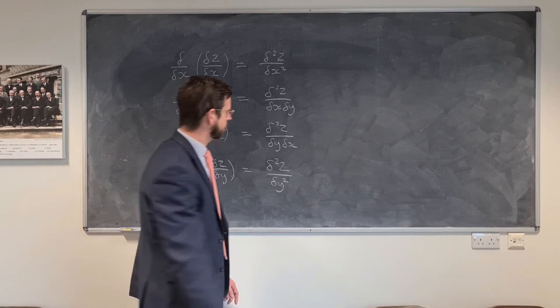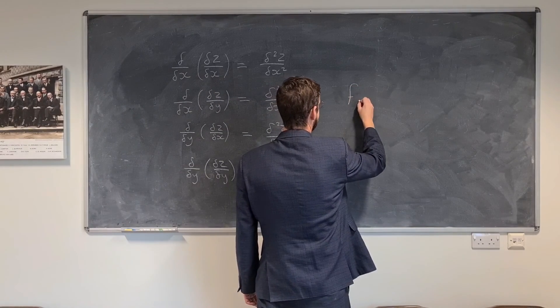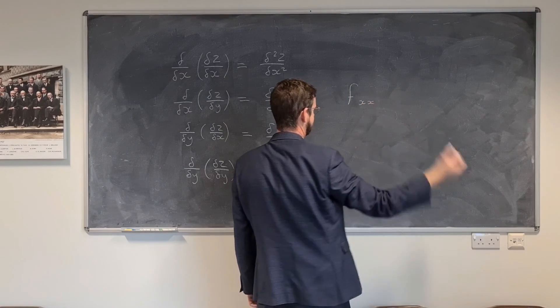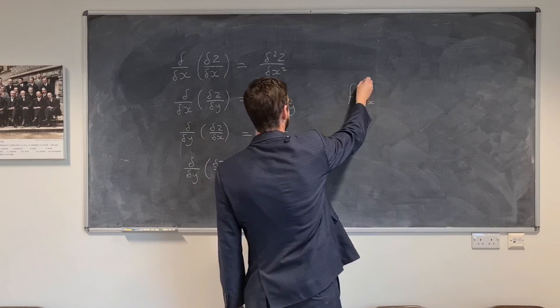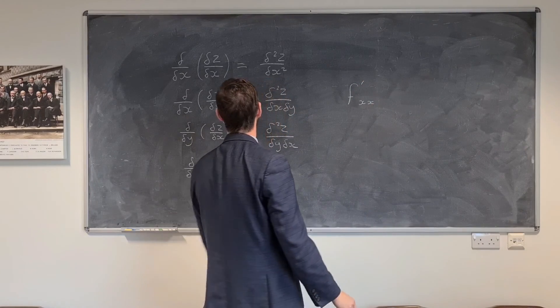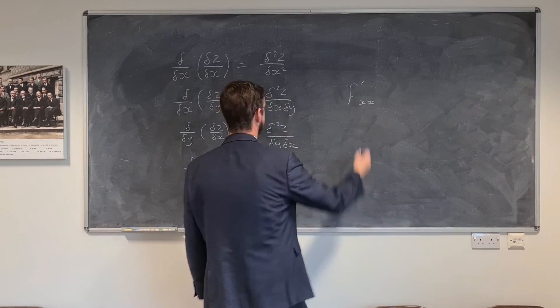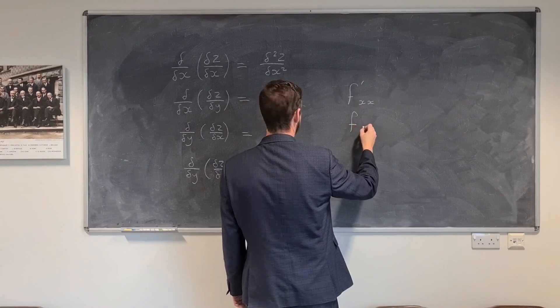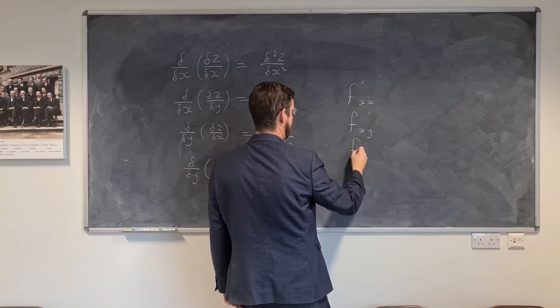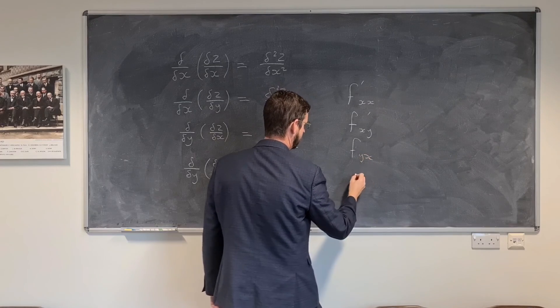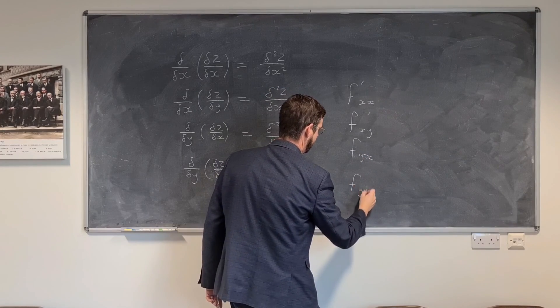Through our notation of f prime and such, we would just have to be careful, and we would describe it as fxx, showing that the first order derivative, for example, was a differentiation with respect to two x's, like this one here. The second was fxy, or fyx, or indeed fyy.